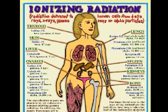Both ionizing and non-ionizing radiation can be harmful to organisms and can result in changes to the natural environment. Radiation hormesis is the theory that low doses of radiation can be beneficial to organisms.